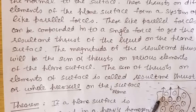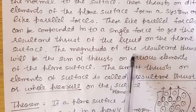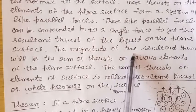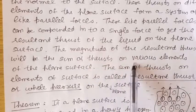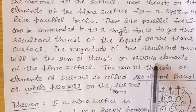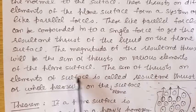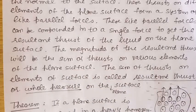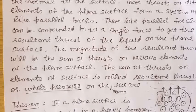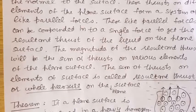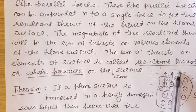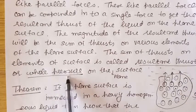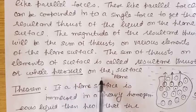The magnitude of the resultant thrust is given by the sum of the thrusts on the various elements of the plane surface. The sum of the thrusts on the different elements of the surface is called the resultant thrust, or we can say whole pressure on the plane surface.